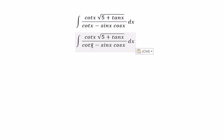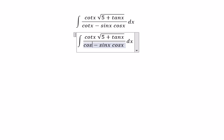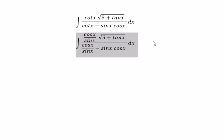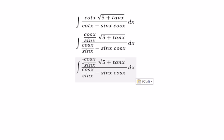We start with cotangent X. We need to change it to cosine X over sine X. Similarly for cotangent X. Next, we multiply by sine X on the numerator and denominator. So this gives us cosine X.